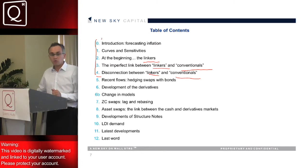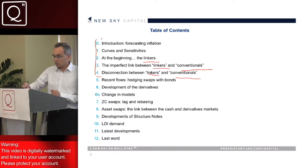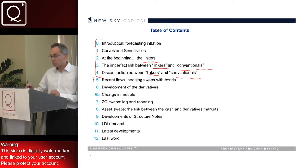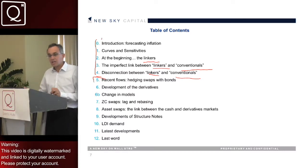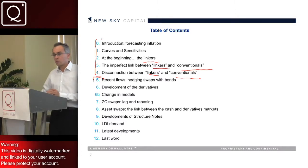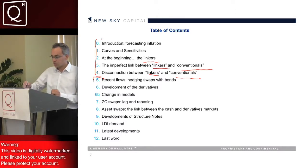Then we're going to move into the second main development of the inflation market, which are the inflation swaps. We're going to see how inflation swaps have been developed to hedge specific liabilities of pension funds. I will go back to the pension funds to show where inflation is embedded within them and what the risks are, and detail the structure of the main derivative product, which are the zero coupon inflation swaps.